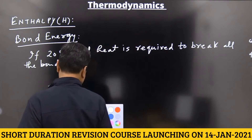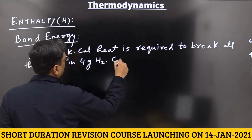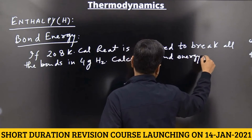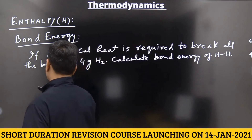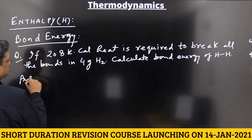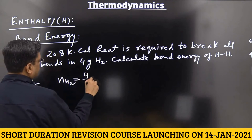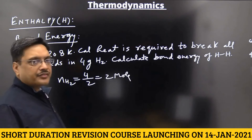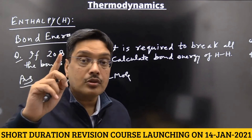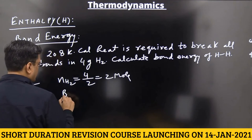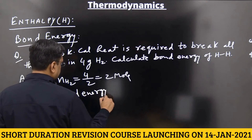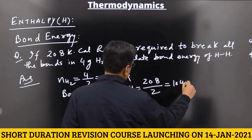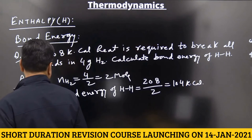All the bonds in four grams of hydrogen — calculate the bond energy of H-H. Number of moles of hydrogen is 4 divided by 2, that is 2 moles. And in 2 moles, 208 kilocalories are required. But the definition is the energy required to break all bonds in one mole, so the bond energy becomes half of that. Bond energy of H-H is 208 divided by 2, that is 104 kilocalories.